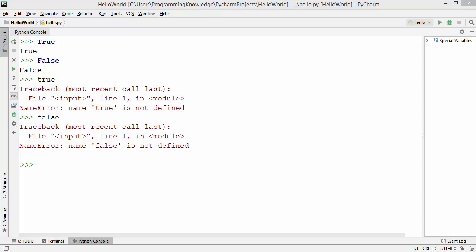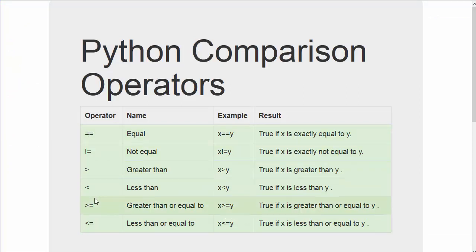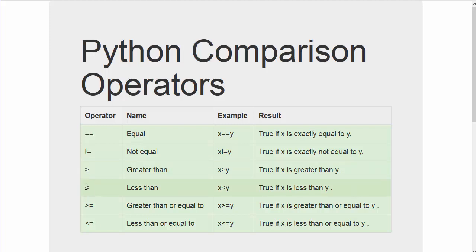Generally we use boolean values to find out the result of some condition. If you have two numbers and want to find out which is greater, you can use a comparison operator and the result will be shown as a boolean value. In Python, comparison operators include: double equals (==) for equality, != for non-equality, greater than (>), less than (<), greater than or equal to (>=), and less than or equal to (<=).